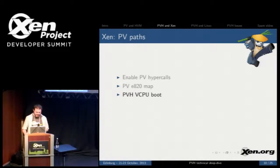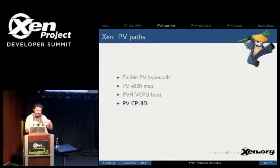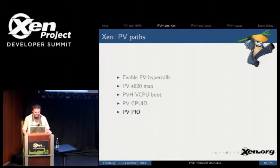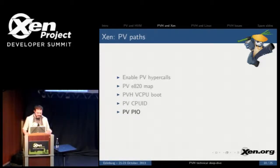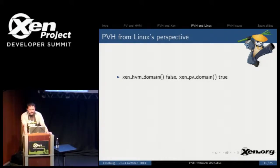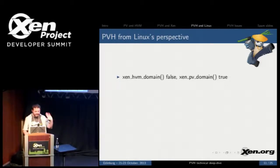PVH has a special way of doing VCPU booting, which I'll cover on the Linux side. We have a PV CPUID — there are a number of special cases for CPUID that have to do with DOM0, and we just take the PV path for that. We also take the PV path for programmed I/O. From Linux's perspective, sitting inside of Linux, ZenHVM domain is false, ZenPV domain is true. But the biggest thing is you just have Linux act natural — there's a huge number of special cases for PV that now you don't have to do anymore.